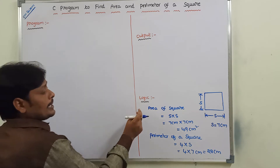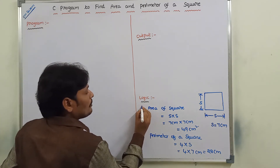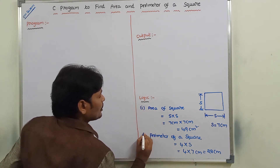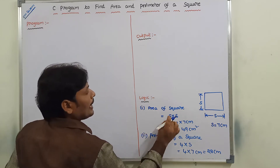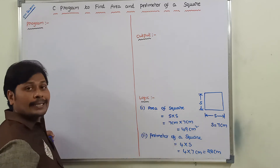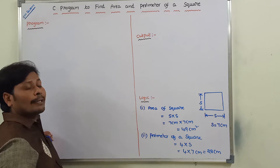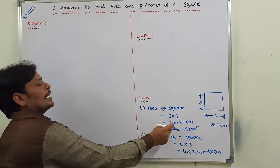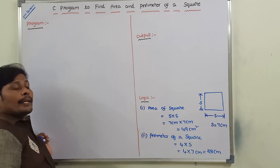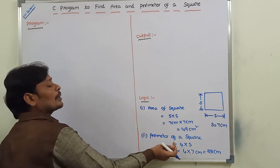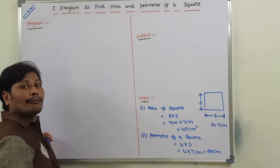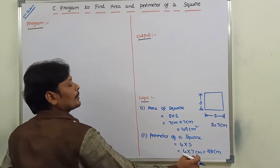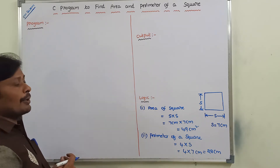Please remember these two formulas: first, area of a square is s into s, where s is the length of one side — so 7 into 7. Perimeter of a square is 4 into the length of one side — so 4 into 7, which equals 28 centimeters. Now we have to write the program.